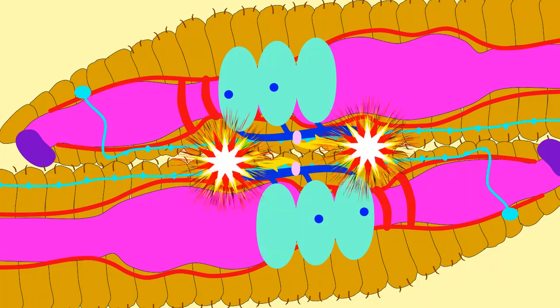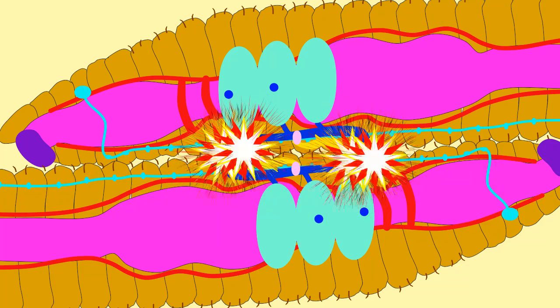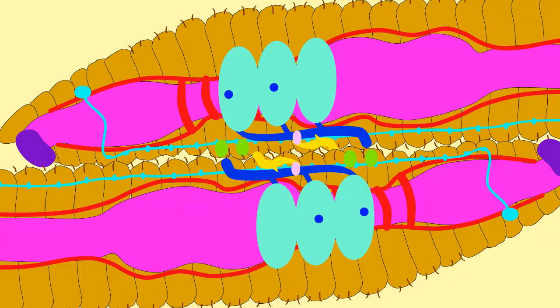Sperm then travel to seminal receptacles, which are part of the female reproductive system and store sperm. These are located between segments 9 and 10 and 10 and 11.